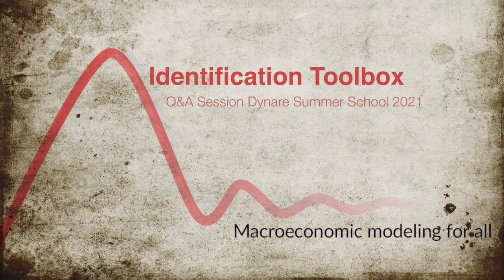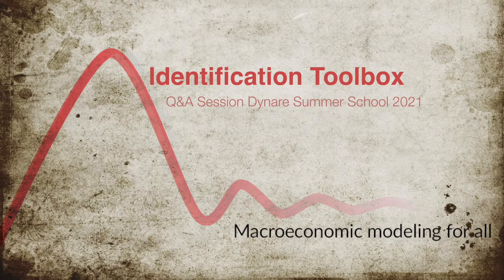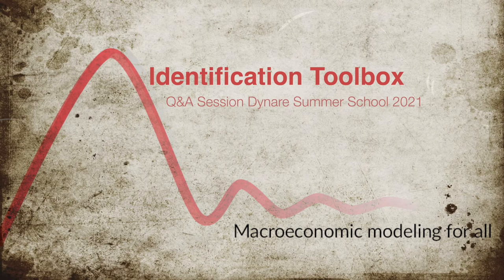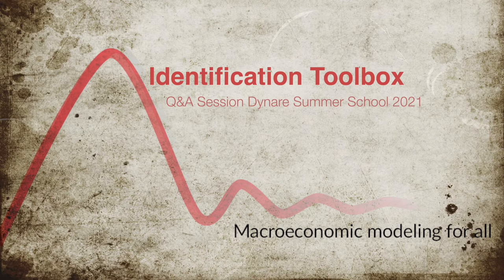Can you explain the minimal system concept? The minimal system concept comes from the state space literature, particularly the linear state space literature. In a state space system you have a transition equation for your state variables and a transition equation for your control variables. The minimal state space representation is the minimal dimension of your state variables that can completely replicate the dynamics of your model.